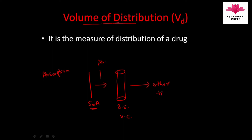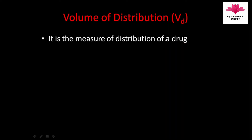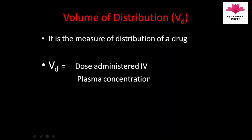Distribution is the movement of drug from the bloodstream to other tissues. Volume of distribution is the measure of the distribution of a drug.